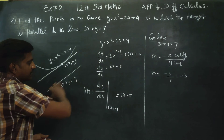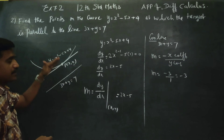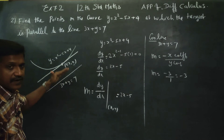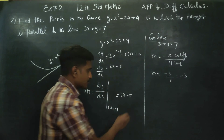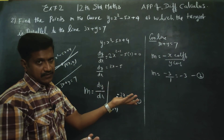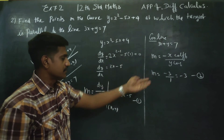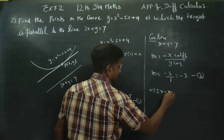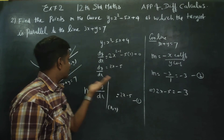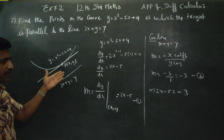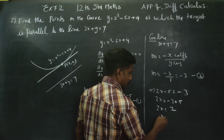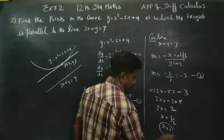Since the tangent and the given line are parallel, their slopes are equal. So: 2x minus 5 is equal to minus 3. Solving: 2x equals minus 3 plus 5, so 2x equals 2, therefore x equals 2 divided by 2, which gives x equals 1.